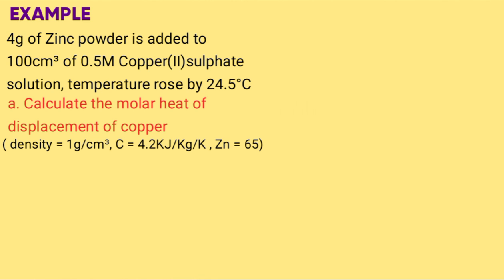Density 1.0 g/cm³. Specific capacity 4.2 kJ/kg/K. The relative atomic mass of zinc equals 65.